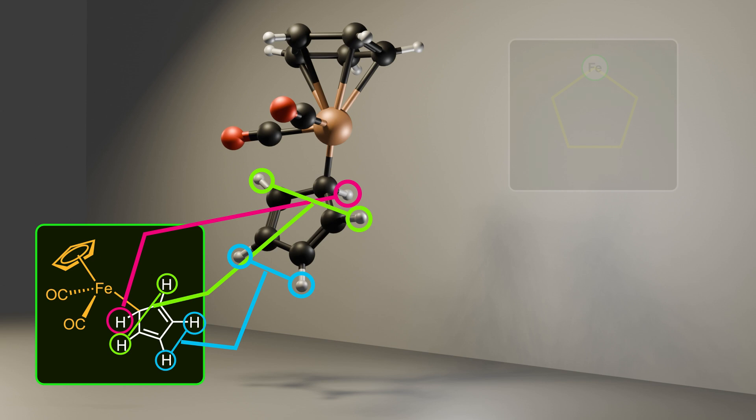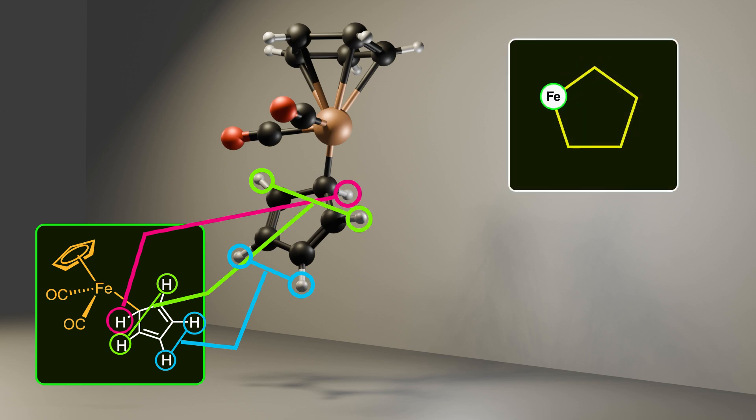This surprising result comes from the fact that iron moves around the cyclopentadienyl ligand. This fluxional behavior is known as ring whizzing or ring walking.